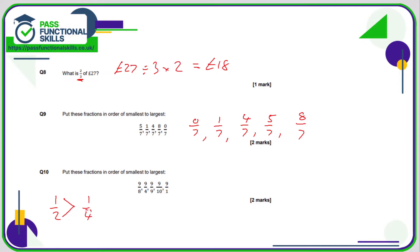So the bigger the number on the bottom means the smaller the amount, provided the numbers on the top are the same. So the smallest of these is going to be the one with the biggest number on the bottom.